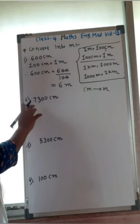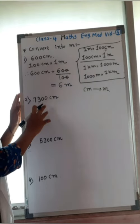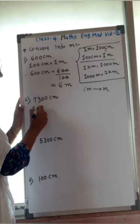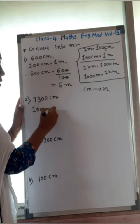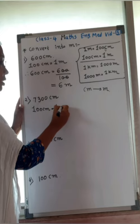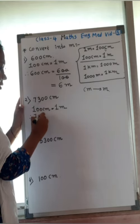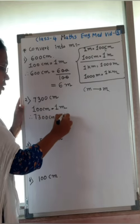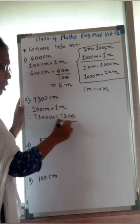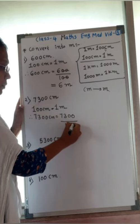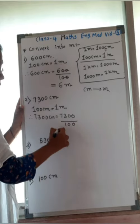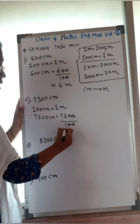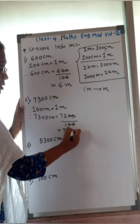The second question is 7,300 centimeter. Again, use the formula: 100 centimeter equals 1 meter. So, 7,300 centimeter equals 7,300 divided by 100. Two zeros cancel, so the answer is 73 meter.